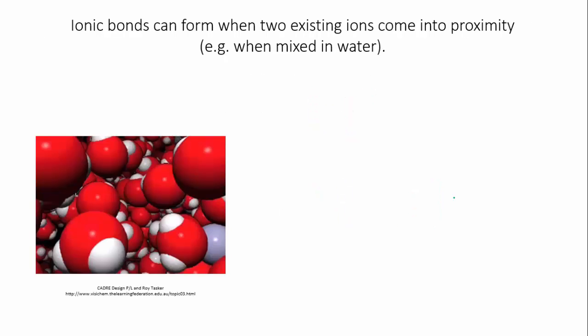So ionic bonding occurs when a metal reacts with a nonmetal. However, it can also occur when two existing ions come into proximity, such as when they're mixed in water.